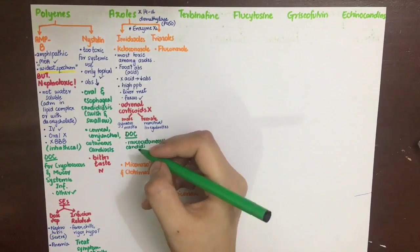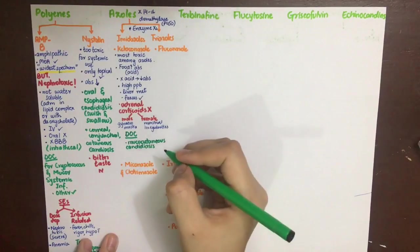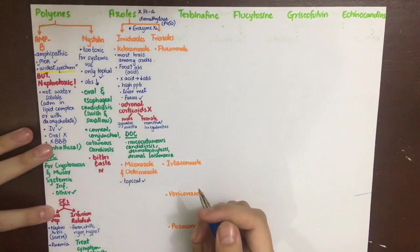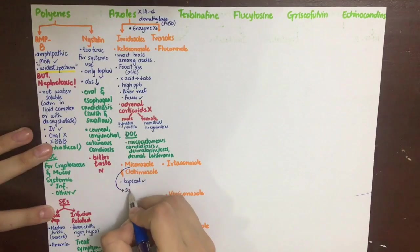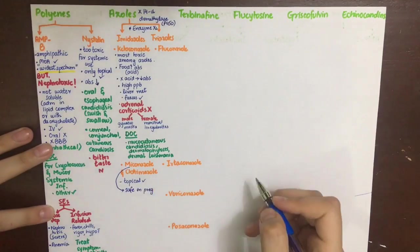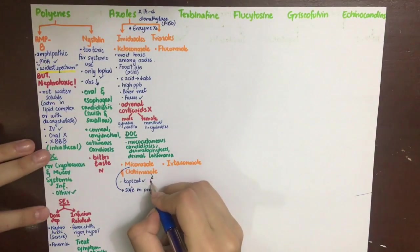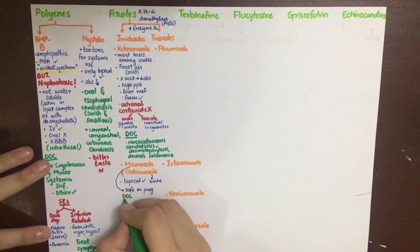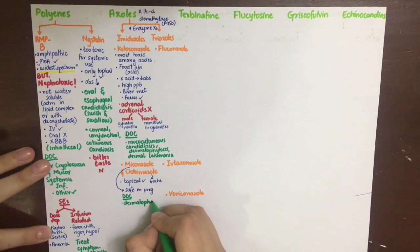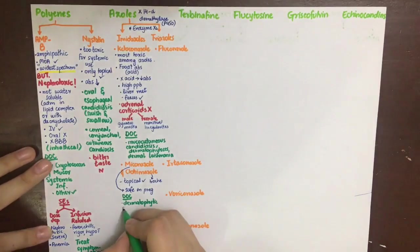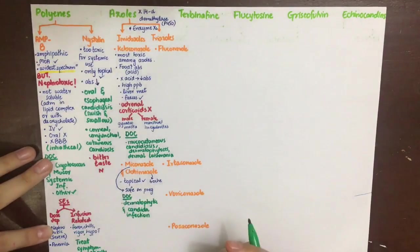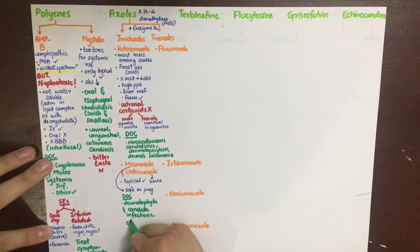Miconazole and clotrimazole are also used topically, and among both of these, miconazole is safe in pregnancy. These are considered the drug of choice in dermatophytic and candida infections, and also in otomycosis. These are all topical uses. Coming to the triazoles, the first drug fluconazole is very important. You need to remember this one because it has many advantages.